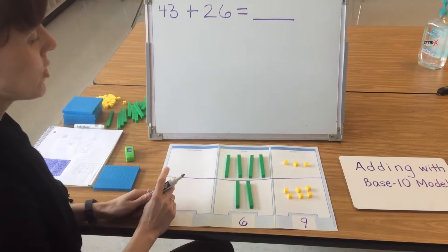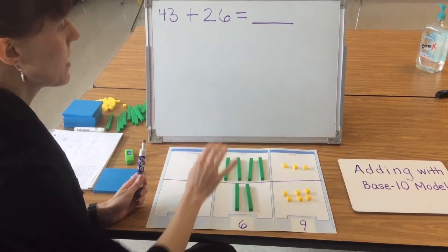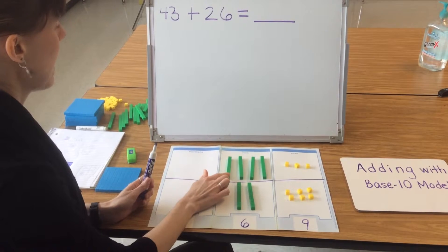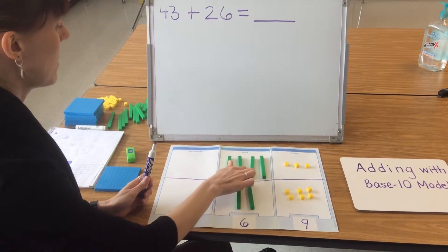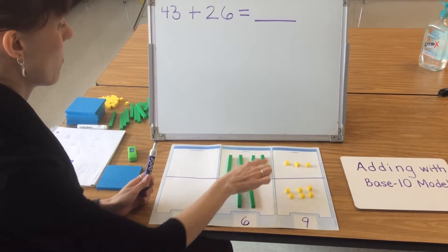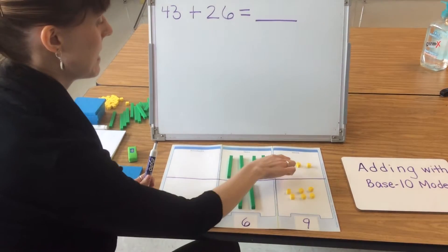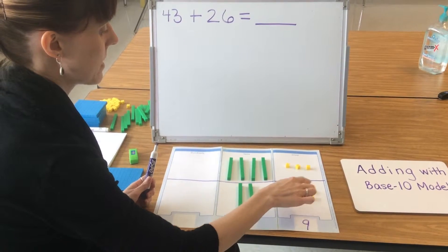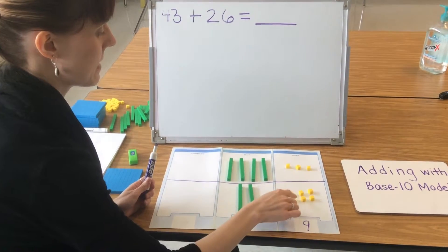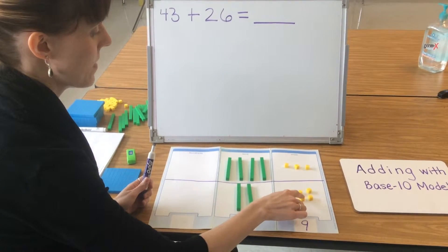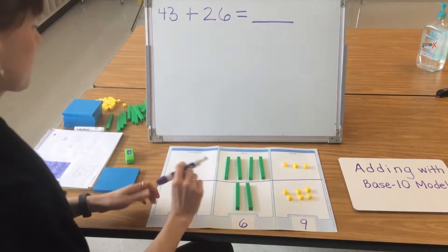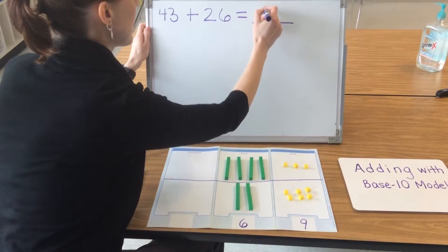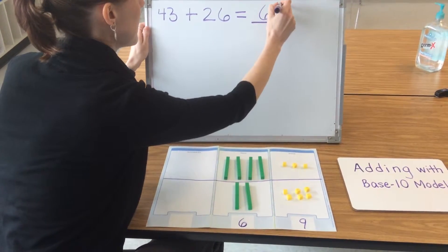When I'm finished, I like to count the whole model just to make sure that my addition was correct: 10, 20, 30, 40, 50, 60, 61, 62, 63, 64, 65, 66, 67, 68, 69. The total of 43 and 26 is 69.